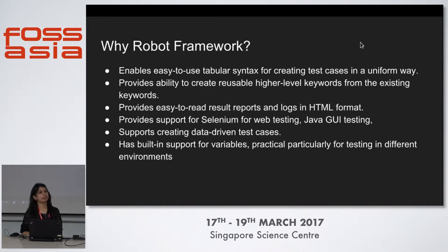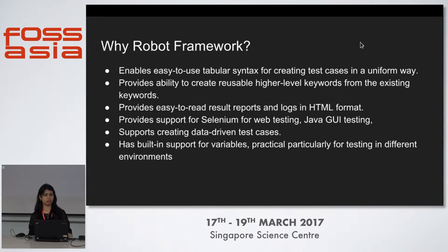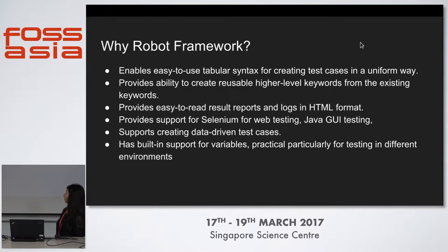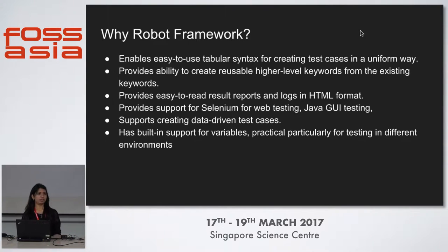As there are different frameworks like JBehave and Cucumber, why should we use robot framework? The benefits are: first, it enables easy to use tabular syntax for creating test cases, so we can easily maintain our test data, and the test data is also easy to read and modify. It provides usable high level keywords — there are inbuilt libraries and we can create our own keywords using those defined in the libraries. It also provides easy to read reports and logs.